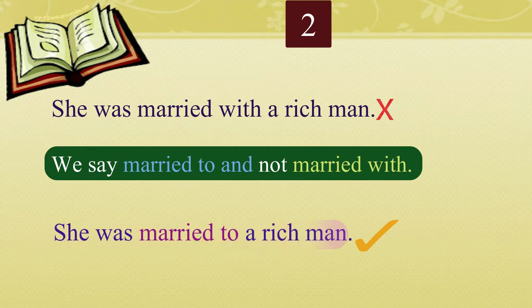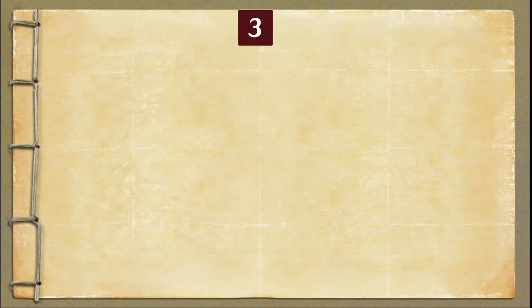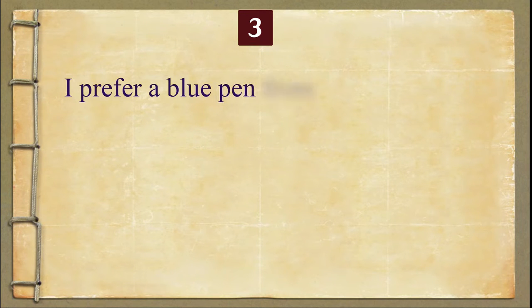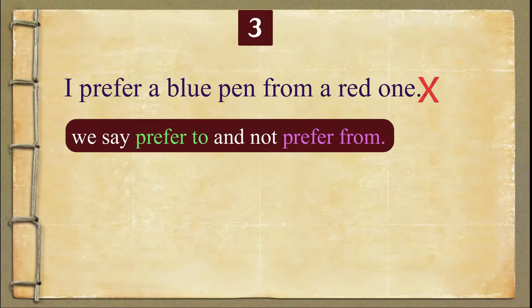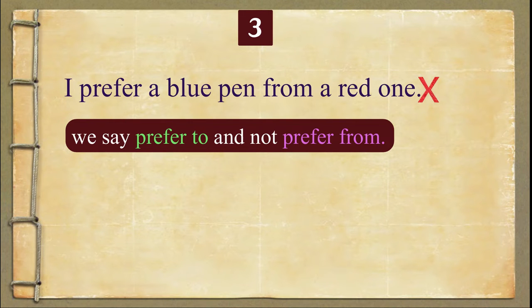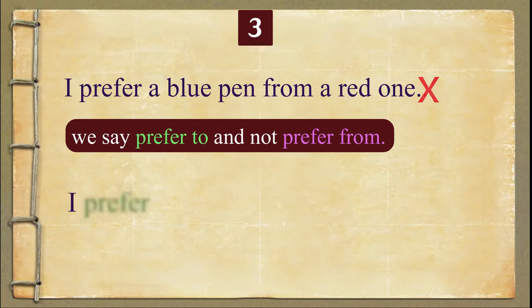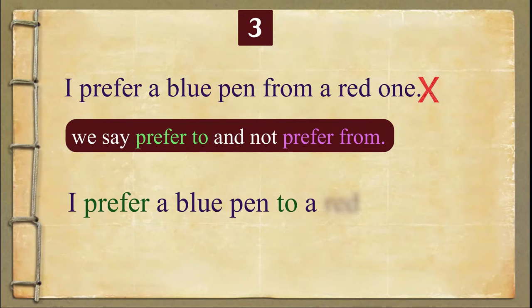Number three: 'I prefer a blue pen from a red one.' Please note, we say 'prefer to' and not 'prefer from.' Please repeat the correct sentence after me: I prefer a blue pen to a red one.